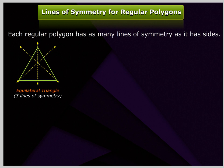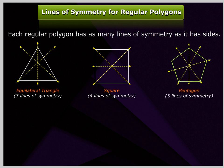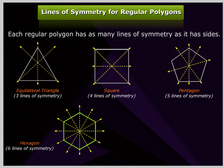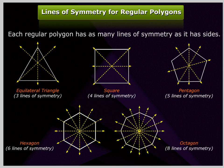Equilateral triangle has 3 lines of symmetry, square has 4 lines of symmetry, pentagon has 5 lines of symmetry, hexagon has 6 lines of symmetry, and octagon has 8 lines of symmetry.